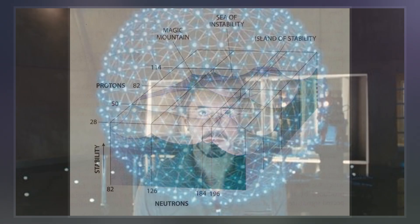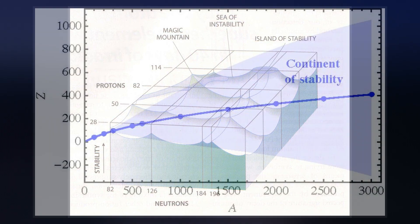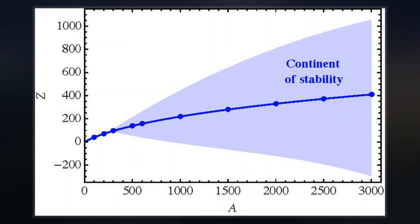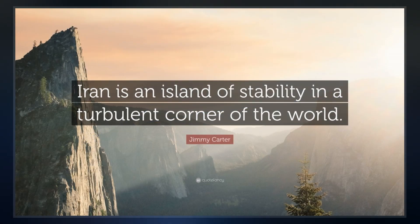While these effects are expected to be greatest near atomic numbers Z equals 114 and N equals 184, the region of increased stability is expected to encompass several neighboring elements and there may also be additional islands of stability around heavier nuclei that are doubly magic.